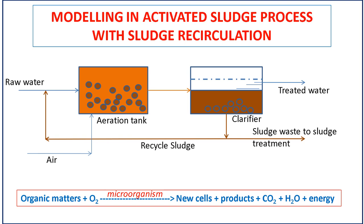The sediment from the bottom of the sedimentation tank contains a high concentration of microbes, which is then recirculated into the aeration tank. A portion of the sludge is also discharged to the sludge treatment unit to prevent accumulation of sludge solids, and also to adjust the residence time of microbial cells.